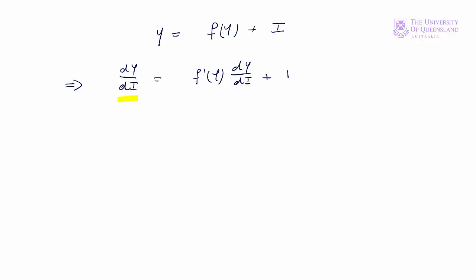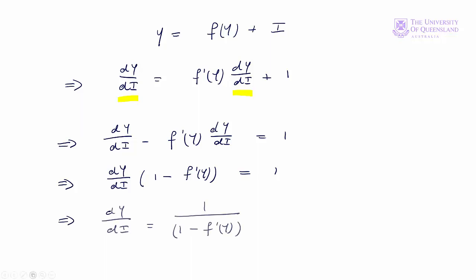We have dY/dI in two places, so we want that on the left-hand side. We subtract f prime Y times dY/dI from both sides. We can collect like terms and divide through by 1 minus f prime Y. So now we've found how total income, Y, changes as I changes. It's equal to 1 over 1 minus f prime Y.